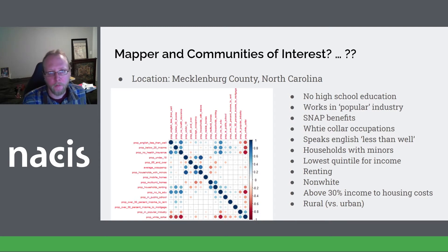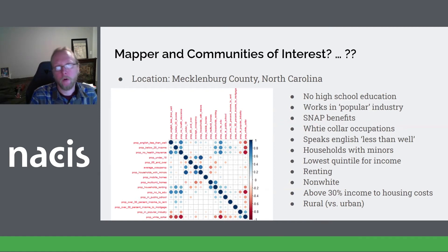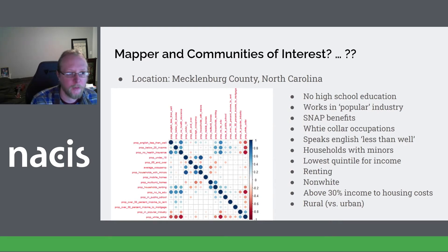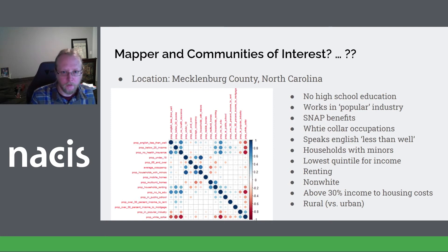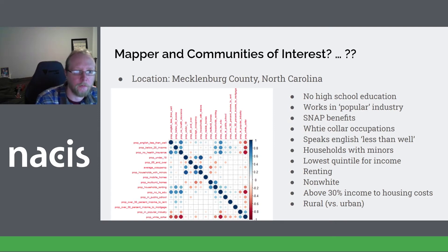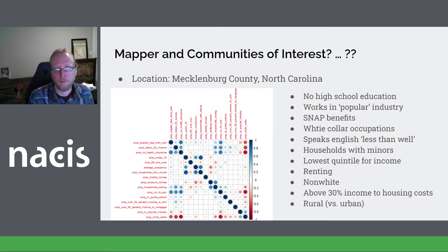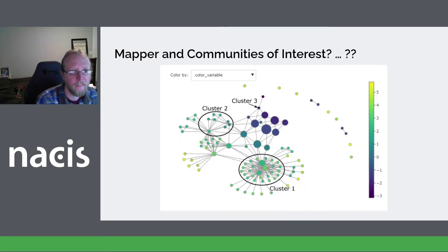In the interest of time, I'm going to skip over much of the process by which we selected and determined the variables. We worked from ACS data at the block group level, and here you can see a correlation table of the various potential variables considered. All code, data, and outputs are in the process of being made public. After consideration, you can see the list of variables we used — these became the original dimensions of the data set which Mapper will reduce and then analyze.